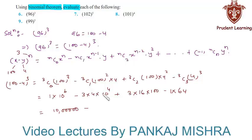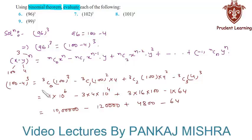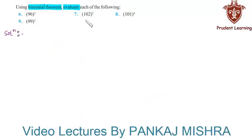Minus 3 into 4 into 10⁴ equals 1,20,000. Plus 16 threes of 48, and 48 into 100 is 4,800. Minus 64 into 1 is 64. When you do the arithmetic you will get 8,84,736. Hence we can say that 96 cube is 8,84,736.